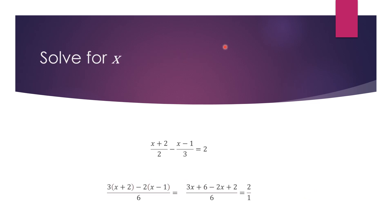Now we look at the final question. The first question was an addition of algebraic fractions, the second was a subtraction. In this third question it is also a subtraction of algebraic fractions; however, it is also an equation because it is equated to 2, so at the end we should have an answer for x. The first step is to find the LCM: 2 multiplied by 3 gives us 6, which is the lowest number both 2 and 3 can go into without a remainder.